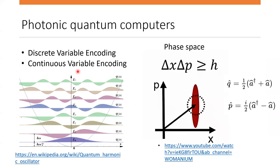Let me now move on to photonic quantum computing. As the name suggests, in this approach we use photons to perform calculations. Photons are light particles that travel at the speed of light — you can't simply stop a photon, so it's tricky to perform calculations on it. Moreover, while electrons are very good at processing information, photons are not and seldom interact with each other. To tackle this problem, scientists invented a completely different approach called measurement-based quantum computing.